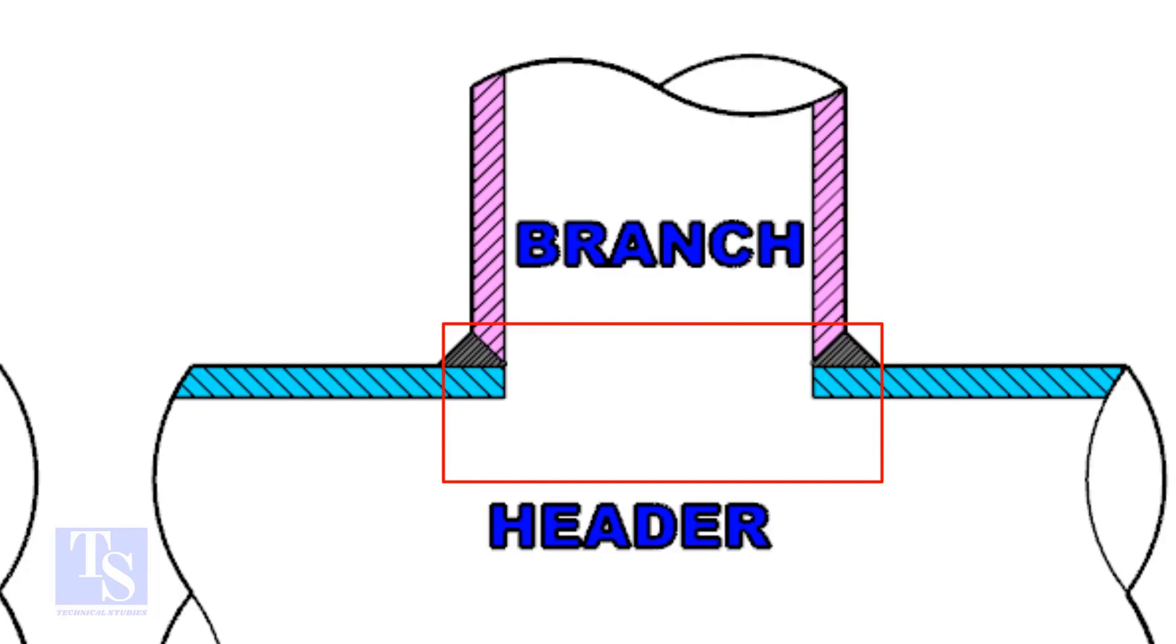And on the header pipe, a hole is there. The diameter of the hole on the header pipe is the same as the inside diameter of the branch pipe.